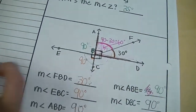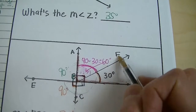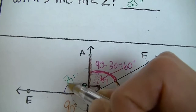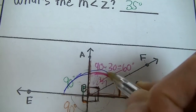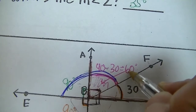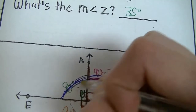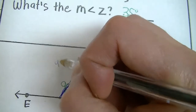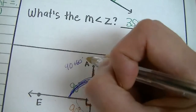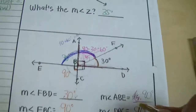Next, find the measurement of angle EBF. That's this large obtuse angle — it's the combination of two angles. Since the ABE portion is 90 degrees and the ABF portion is 60 degrees, you simply add: 90 + 60 = 150 degrees. So the measurement of angle EBF is 150 degrees.